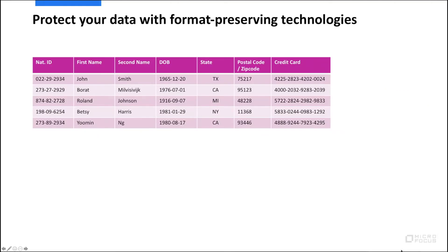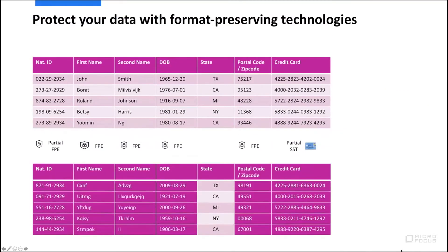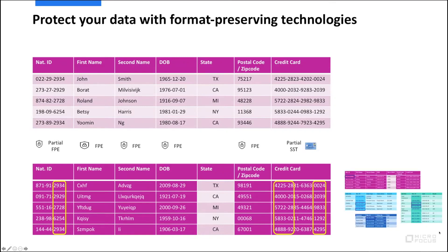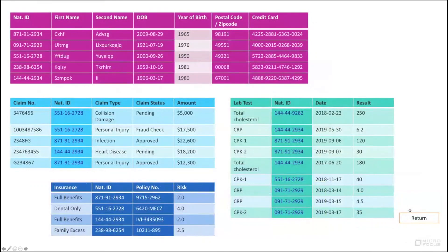If we apply this to a number of records in a database, we can mix and match format-preserving encryption with secure synchronous tokenization. We can do things at a partial level — protecting middle digits of a credit card or leading digits of a social security number. And if we look just a little bit further, in the analytics world, when we have this data protected across hundreds of thousands of tables that may have relationships, what does that look like? Let's delve into this quickly.